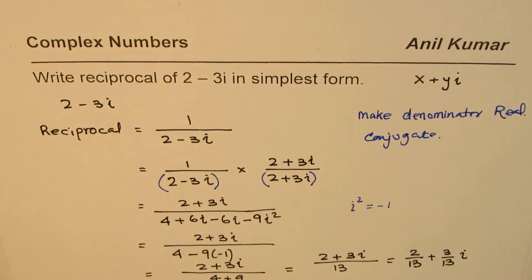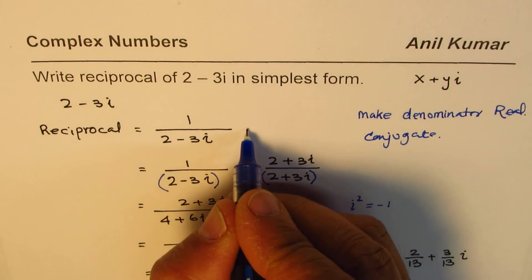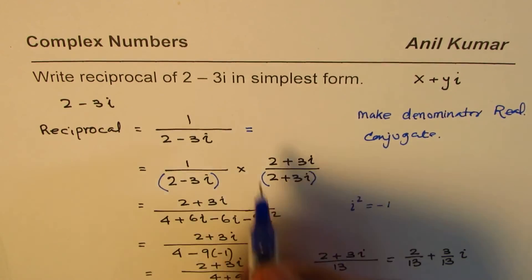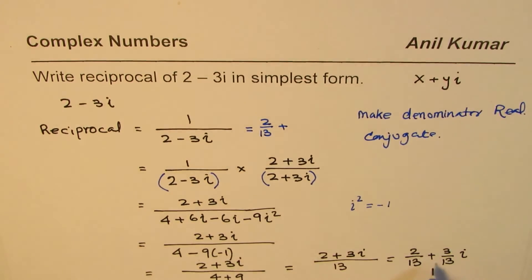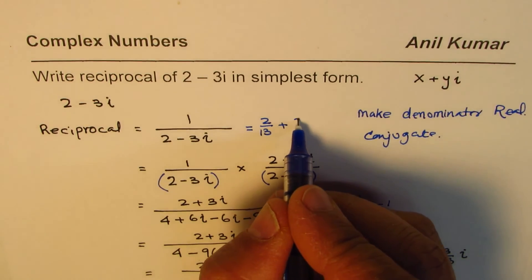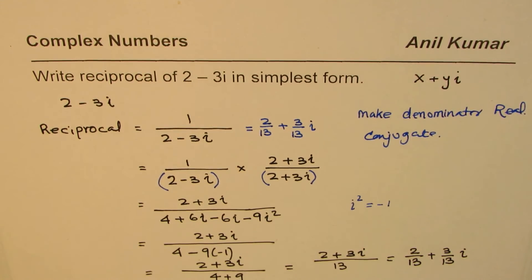This becomes 2 over 13 plus 3 over 13i. That is the simplest form. Therefore, we can say the reciprocal of this number is equal to 2 over 13 plus 3 over 13i. That is how you can find the reciprocal of a complex number.